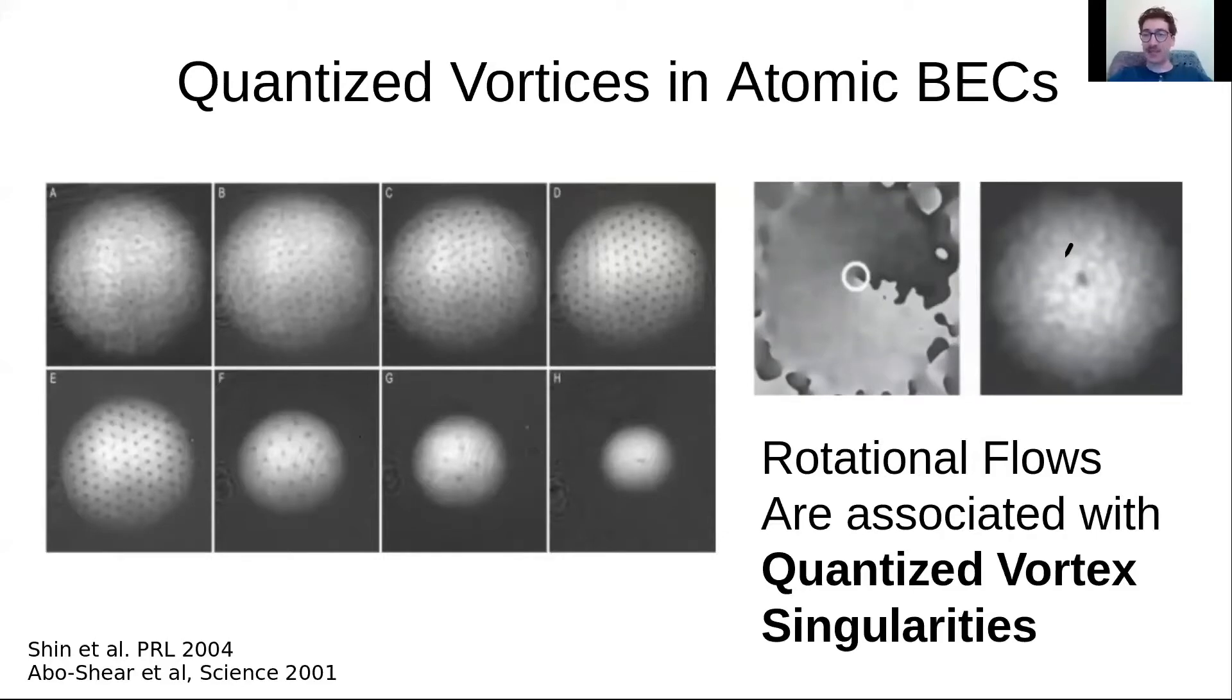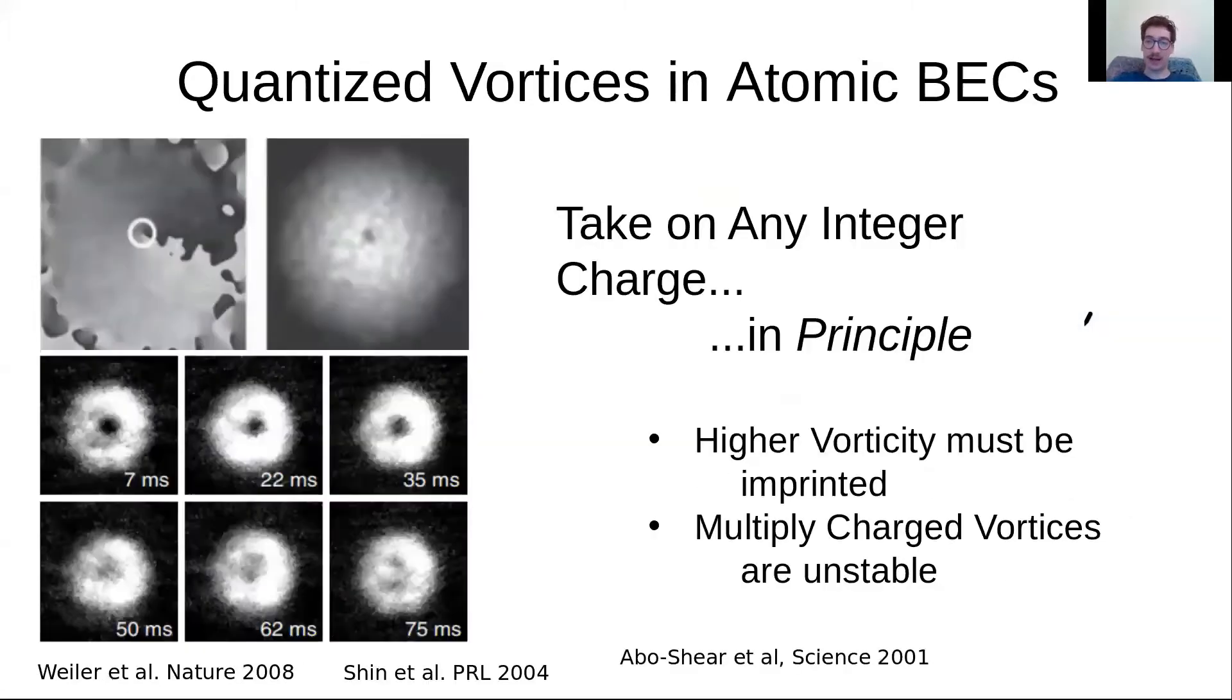In principle, this winding number or topological charge can take on any integer value. But in effect, in most scenarios, any charge higher than one is dynamically unstable, and a multiply charged vortex will quickly break apart into a series of more stable unit vortices.